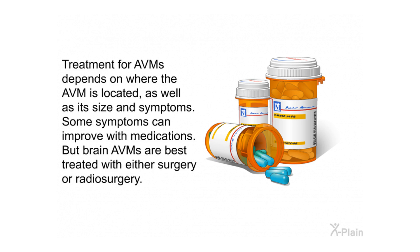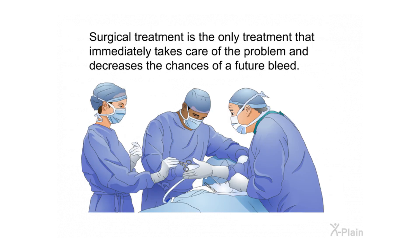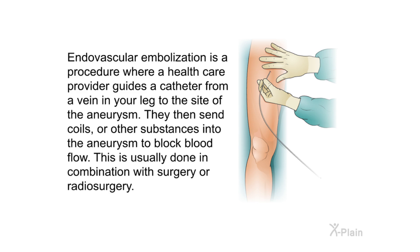Treatment for AVMs depends on where the AVM is located, as well as its size and symptoms. Some symptoms can improve with medications, but brain AVMs are best treated with either surgery or radiosurgery. Radiosurgery uses beams of radiation sent through the skull to destroy the AVM with no incisions; however, the AVM closes by itself within one to three years, during which the brain remains at risk for bleeding. Endovascular embolization is a procedure where a catheter is guided from a vein in the leg to the aneurysm site, and coils or other substances are sent in to block blood flow. This is usually done in combination with surgery or radiosurgery.